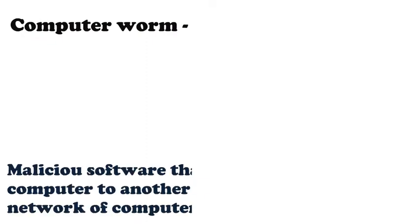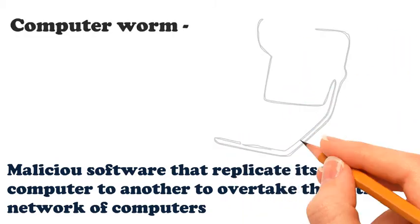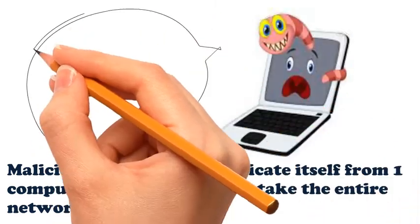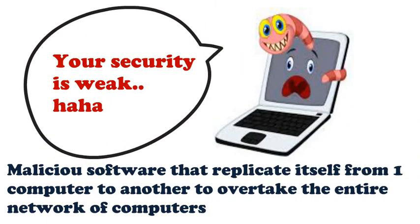A computer worm is a malicious piece of software that replicates itself from one computer to another with the goal of overtaking the entire network of computers. Most worms are designed to infiltrate systems by exploiting their security failures, while very few also try to change the system settings. Even if they don't, they are still very dangerous as they take up a lot of bandwidth and other valuable resources.